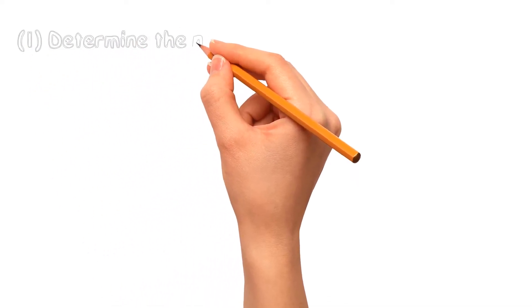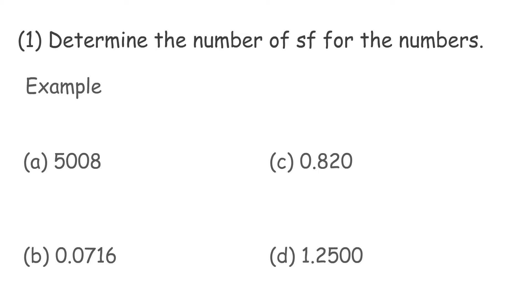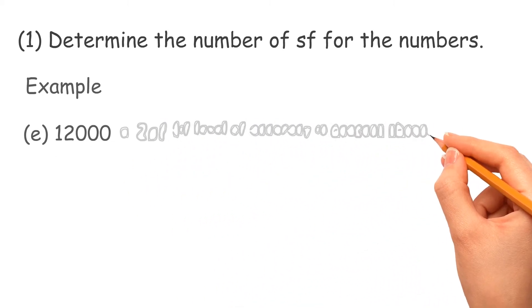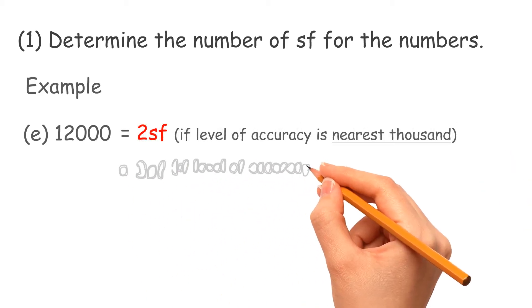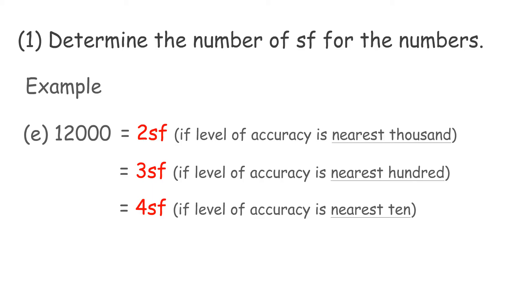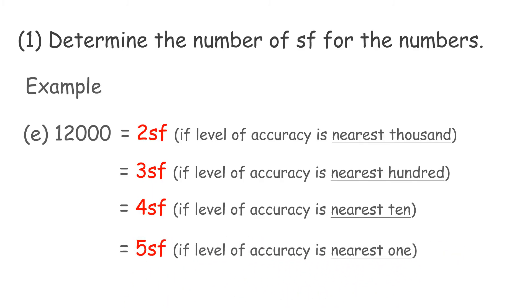It's time to do some practice together. Question 1: Determine the number of significant figures. a) 5008 — 4 significant figures. b) 0.0716 — 3 significant figures. c) 0.820 — 3 significant figures. d) 1.2500 — 5 significant figures. e) 12,000 — 2 significant figures if accuracy is nearest thousand; 3 significant figures if nearest hundred; 4 significant figures if nearest ten; 5 significant figures if nearest one.